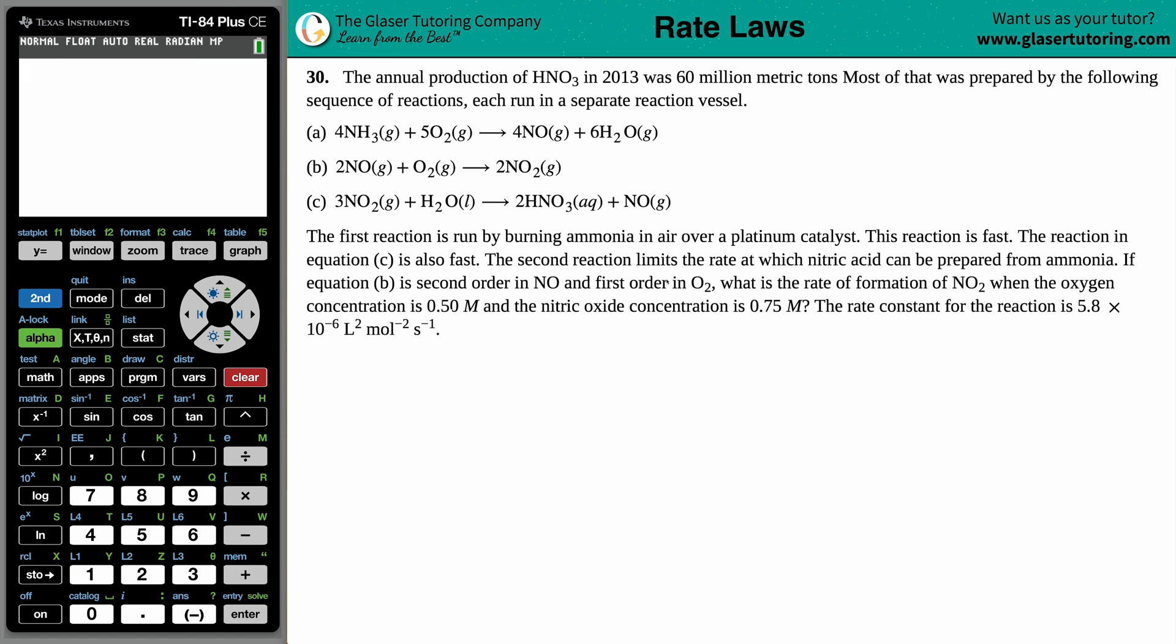Number 30. The annual production of HNO3 in 2013 was 60 million metric tons. So let's just throw that in there. Okay, so most of that was prepared by the following sequences of reactions, each run in a separate reaction vessel. And then they give us three distinct balanced equations. I know that they're balanced because I see coefficients already being thrown up on here, so I'm going to assume that all these are balanced. And at the end of the day, we do produce out the HNO3 that they were talking about, that we produced 60 million metric tons.